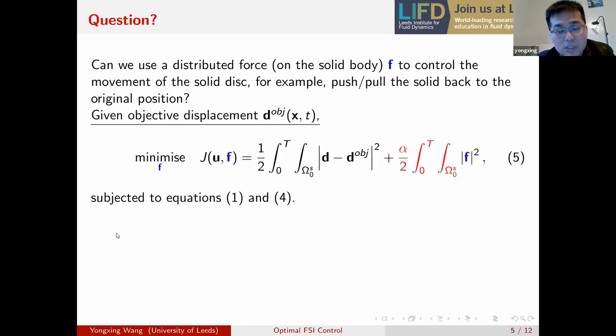So in general, we give an objective function, objective displacement, and we solve a minimization problem, as shown in equation five. So we minimize the difference between the current displacement and the given displacement. We also have regularization terms, the red term, which we want to control the magnitude of the force itself. An easy interpretation of a regularization term is that we don't want an infinite force, or we don't want the force too large.